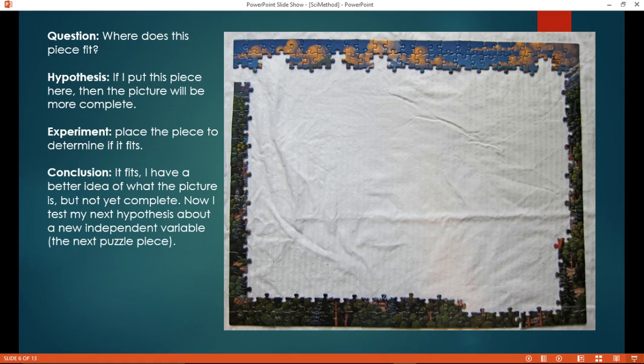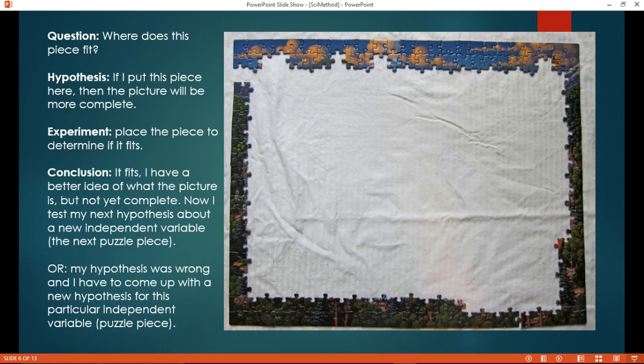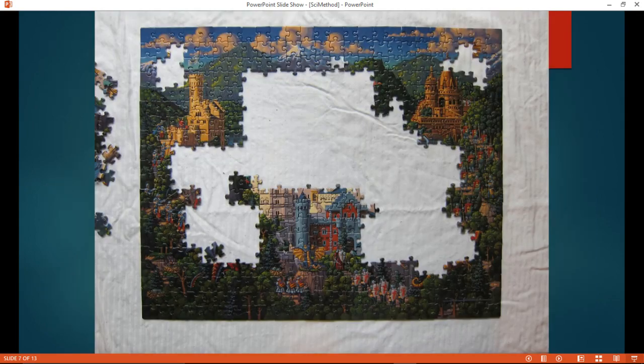And every time that my hypothesis is supported, I get a better, clearer picture. If my hypothesis is wrong, I'll just come up with a new one and try that piece somewhere else. Eventually, as I continue to test new independent variables, I can get a whole predictive picture, predictive statement about what the picture is. The big picture, not just one independent piece. You can determine one independent piece fits somewhere without knowing the big picture.